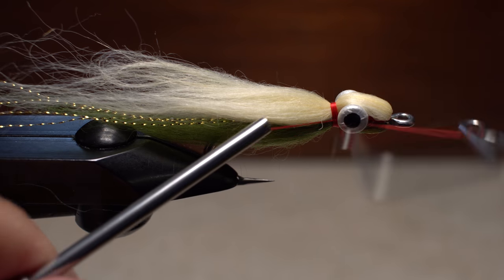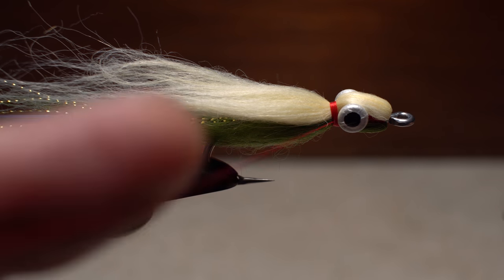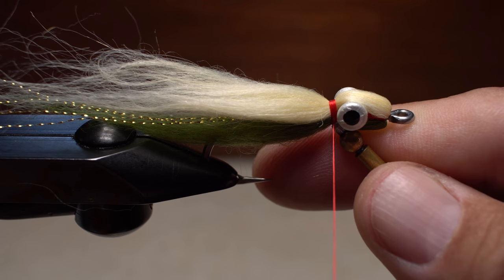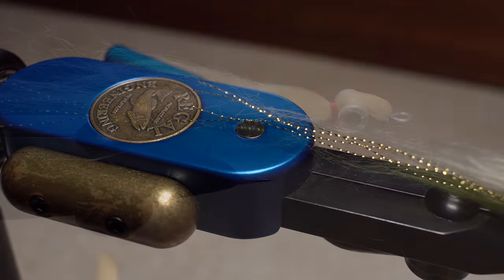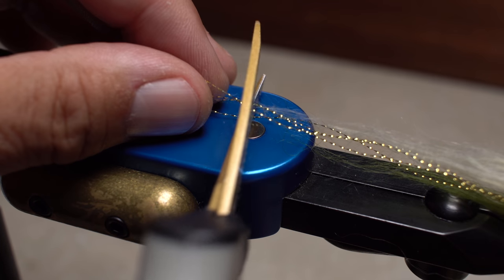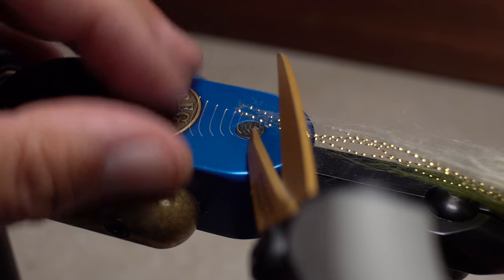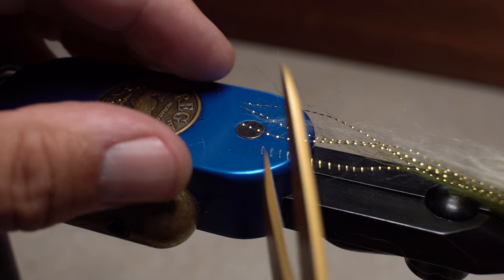After you have the fur clumps locked down, you can do a four or five turn whip finish and snip or cut your tying thread free. Check the length of the crystal flash at the rear of the fly. You want it to be just slightly longer than the craft fur. Snip the excess off if necessary.